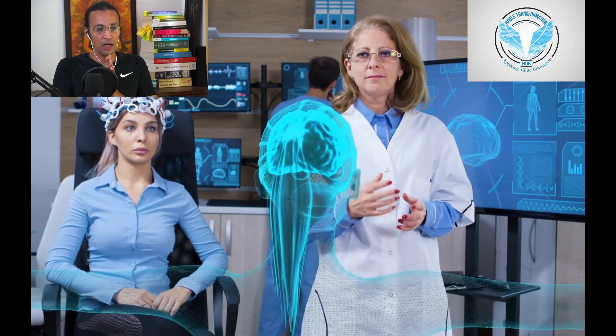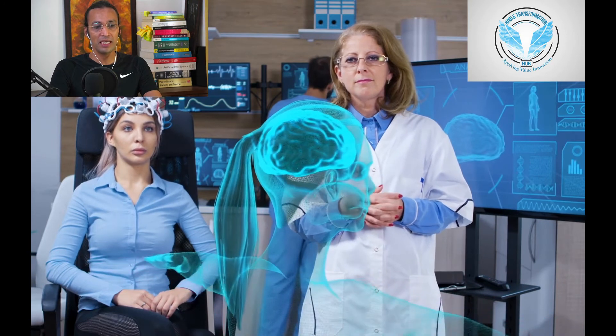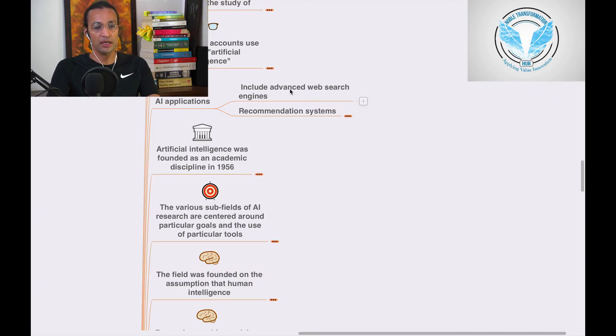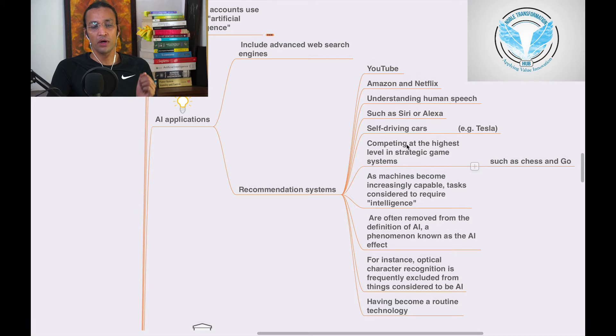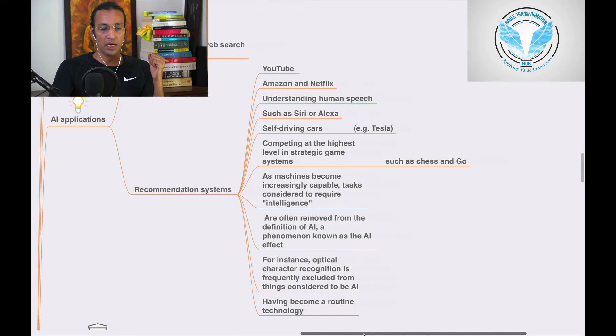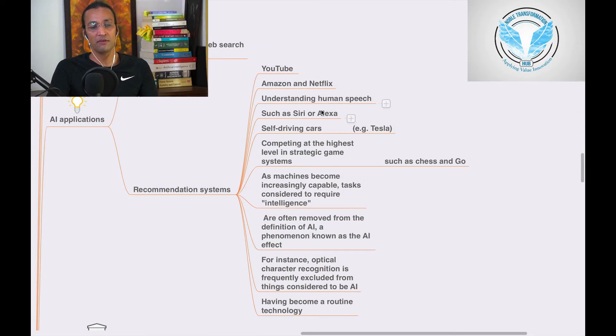Let's move to AI applications and what they include. This includes advanced web search engines like Google, YouTube, Amazon, Netflix, and understanding human speech through applications such as Siri and Alexa.